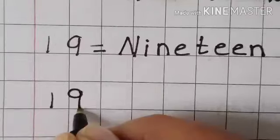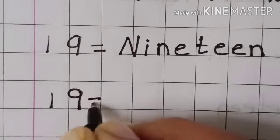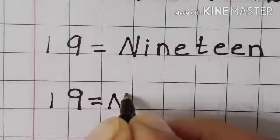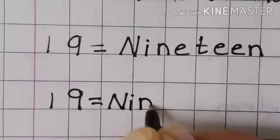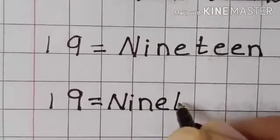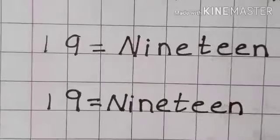Nineteen. What is the spelling of nineteen? N I N E T double E N. Nineteen.